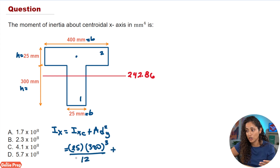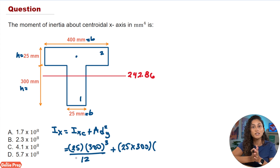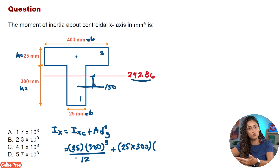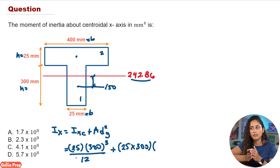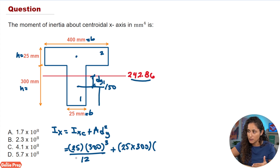Now we add the area times dy squared term for shape one. The area is 25 times 300, and dy1 is the distance from the centroid of the whole shape to the centroid of shape one. The centroid of shape one is y1 = 150, and the centroid of the whole shape is 242.86, so dy1 = 242.86 − 150. Don't forget to square this term.